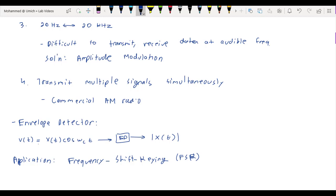And we'll do this using a differentiator followed by an envelope detector. Now, you might wonder, how does a differentiator followed by an envelope detector actually discriminate between the two frequency tones?